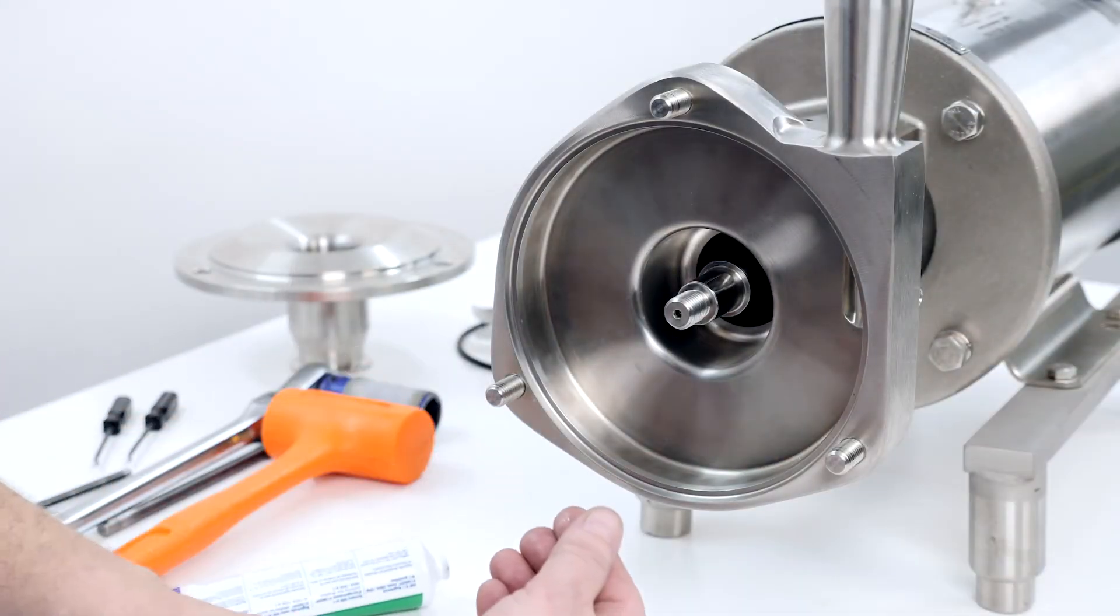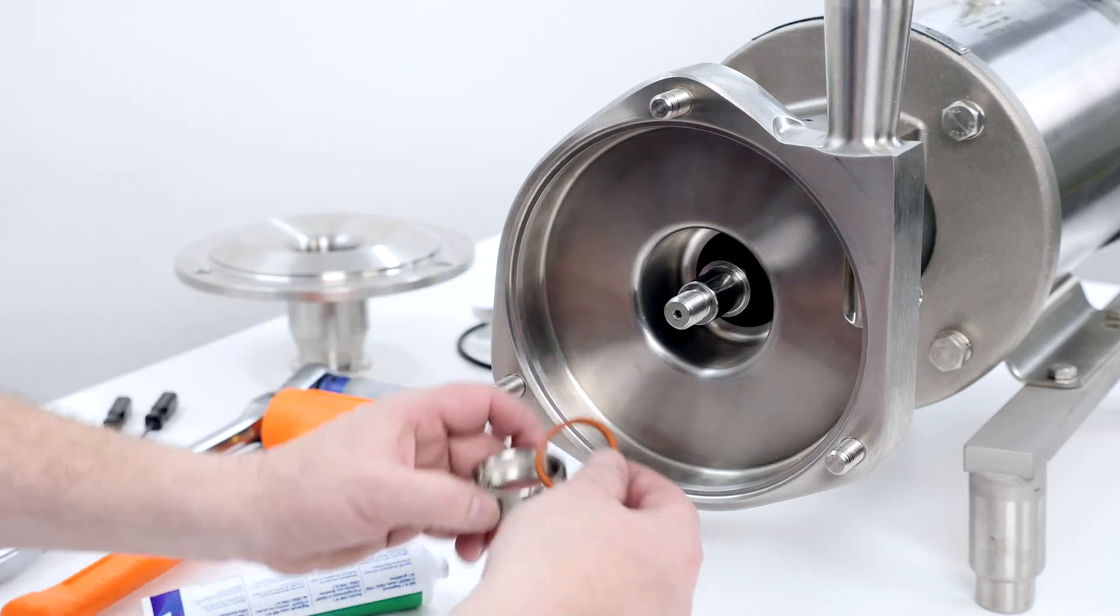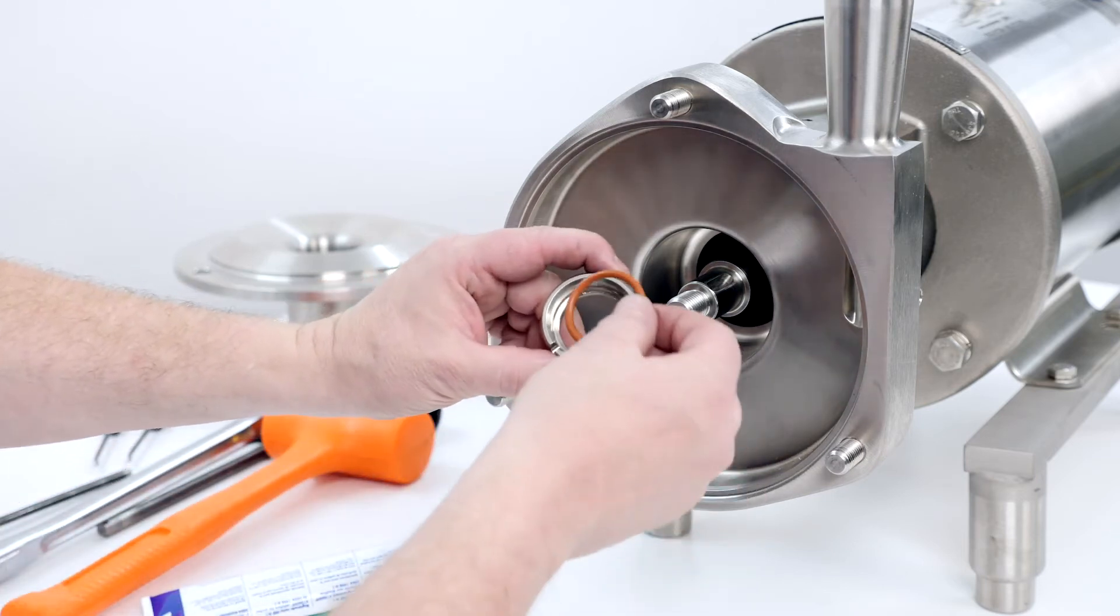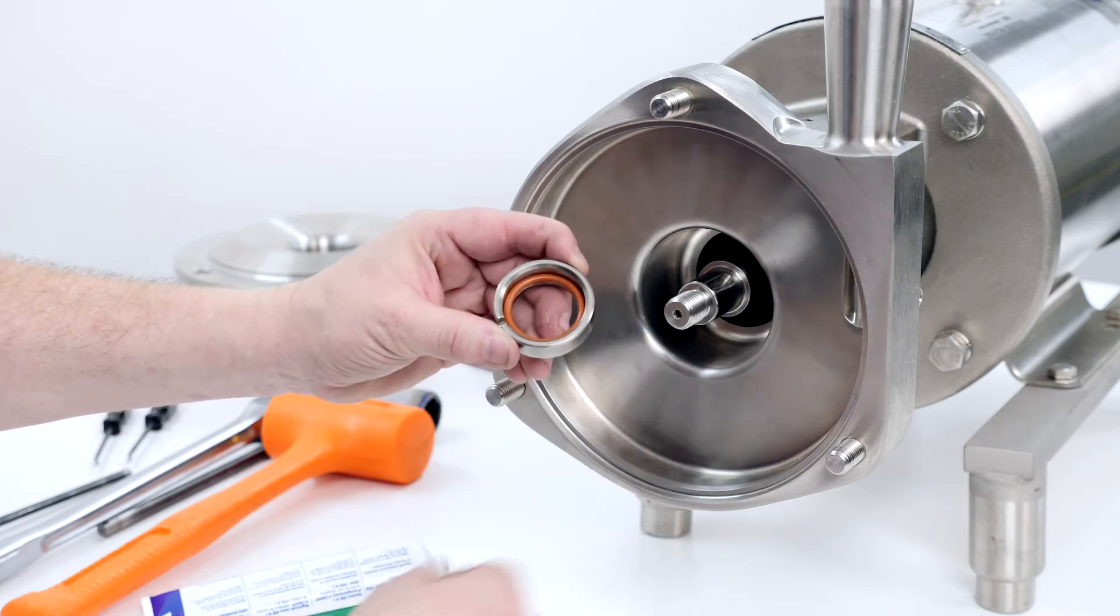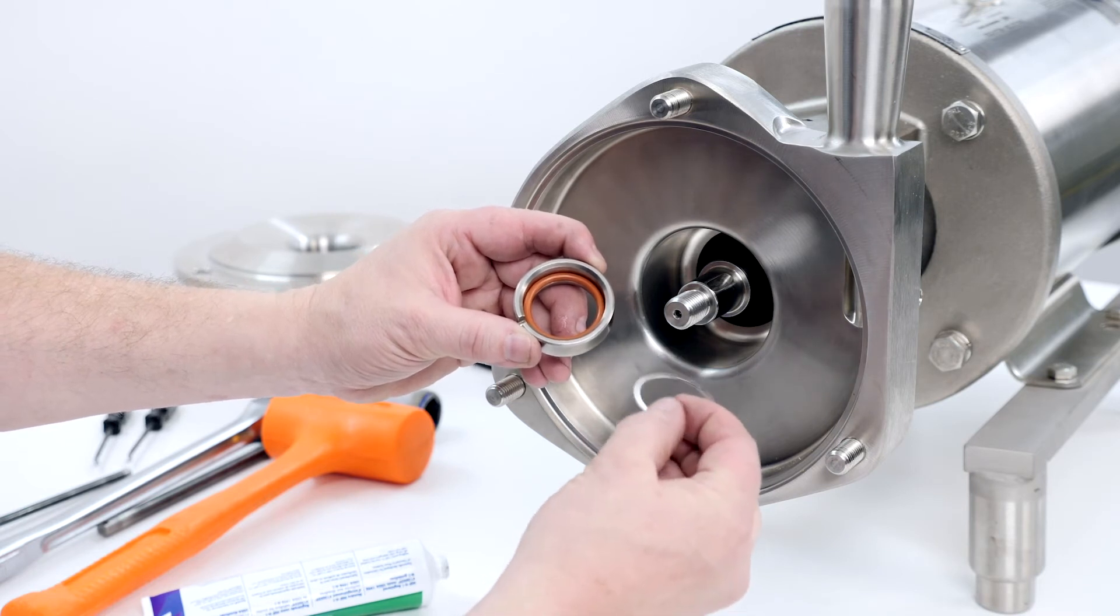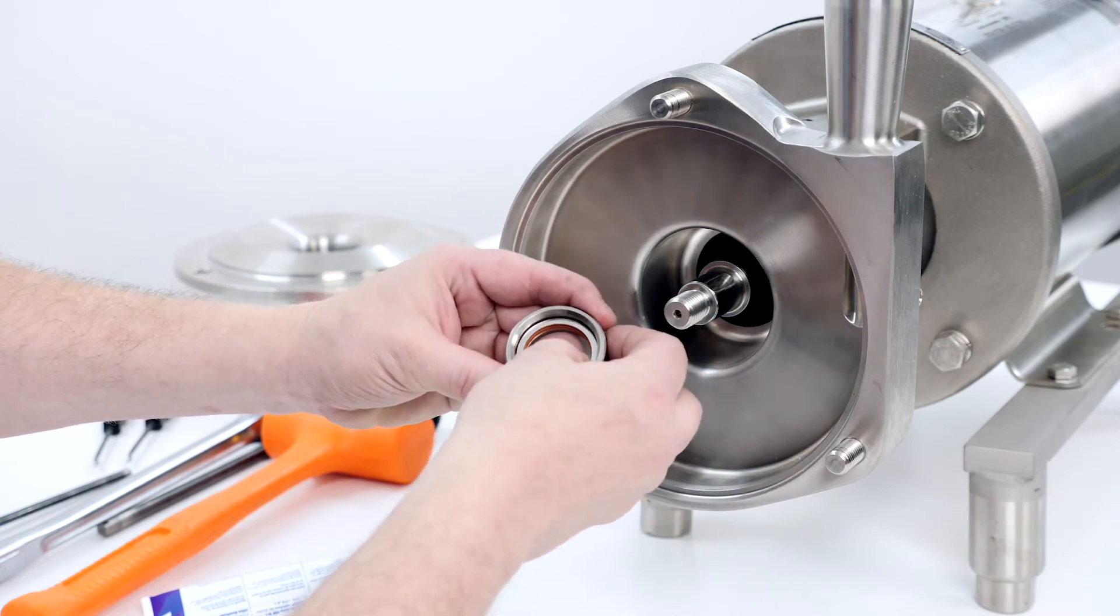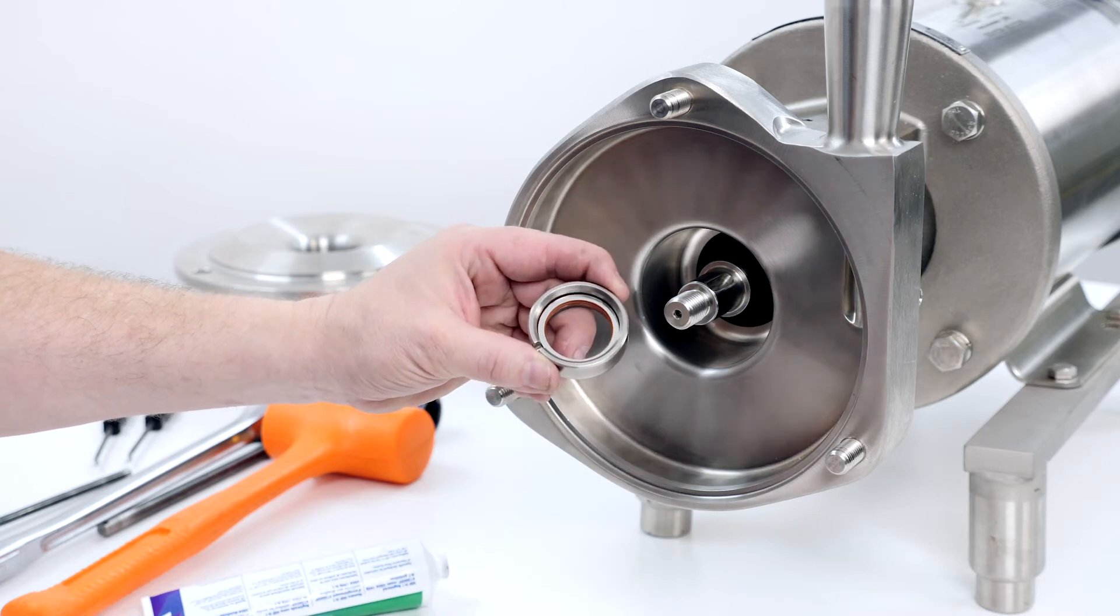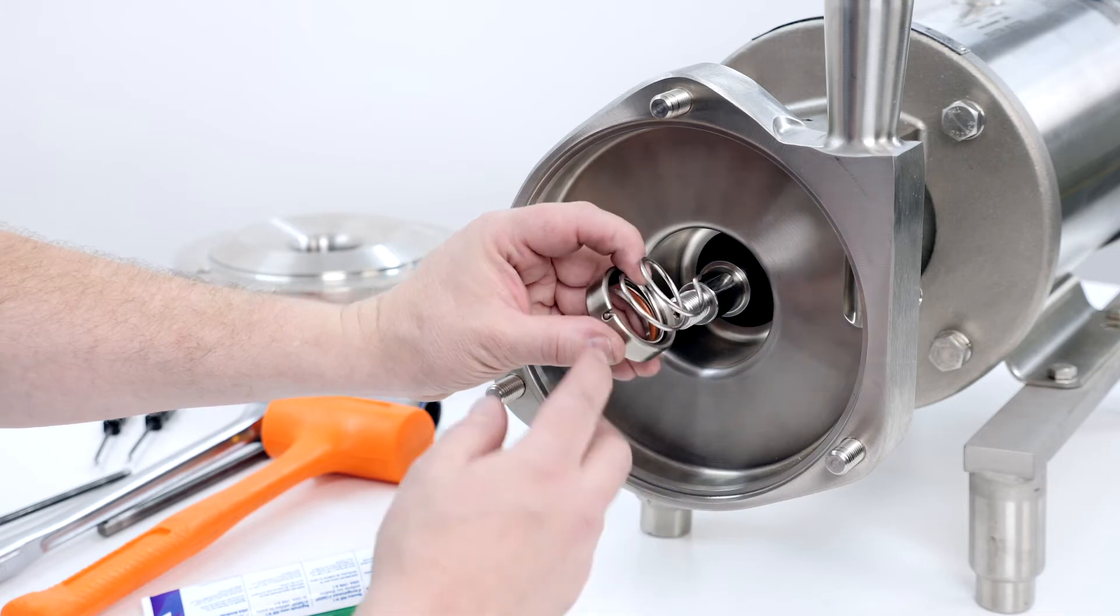Lubricate and place the rotating seal O-ring inside the rotating seal. Place the seal washer into the rotating seal. Install one end of the seal spring into the rotating seal.